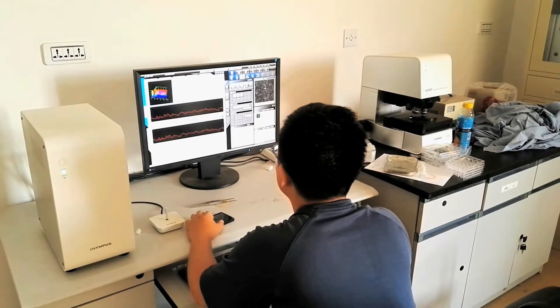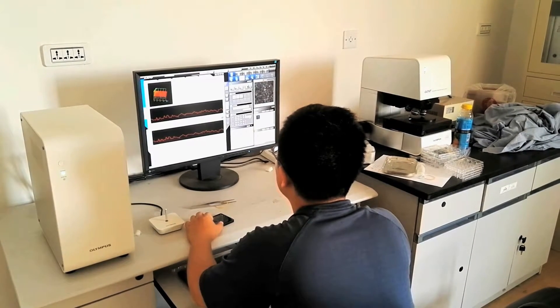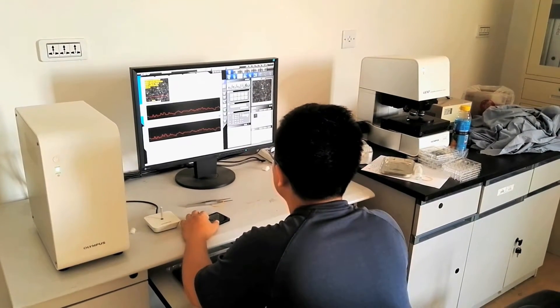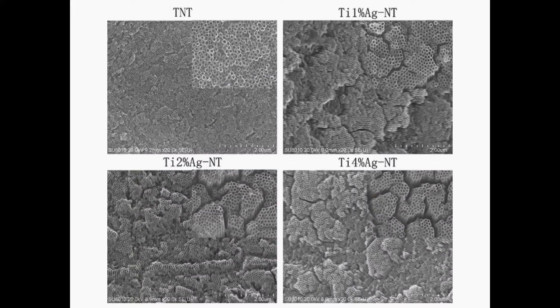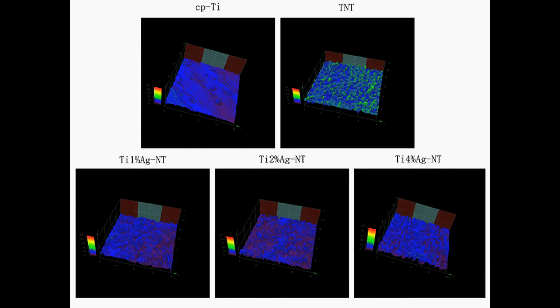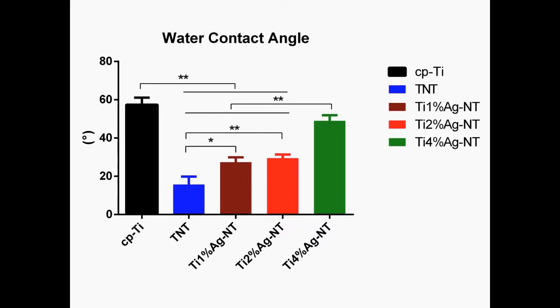The surface characterization experiments were all carried out in the School of Materials Science and Engineering, Shenyang University of Technology. The results proved that nanotubes successfully formed on the titanium silver alloys surface with an average diameter of 20 nanometers, and the surface roughness and hydrophilicity of each sample were quite different from each other.